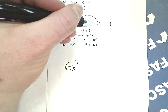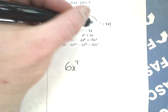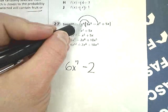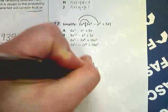Then I do 2x to the 4th times negative 1x to the 2nd. So negative 1 times 2 is negative 2. x to the 4th is 4, plus 2 more is 6.